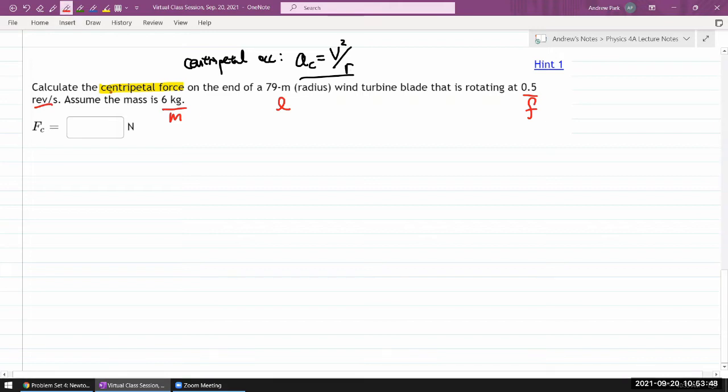Whenever you have centripetal force, centripetal force is always related to centripetal acceleration by mass times the centripetal acceleration. I don't give a blanket statement like that often because usually when we talk about acceleration, I try to say it's the net force that's related to the acceleration.